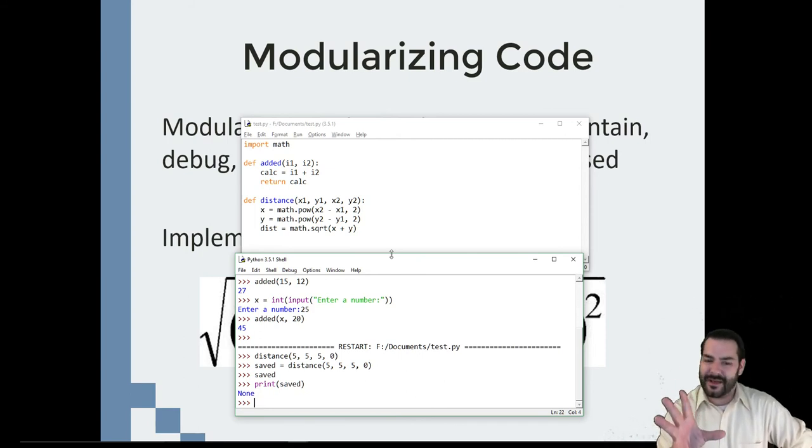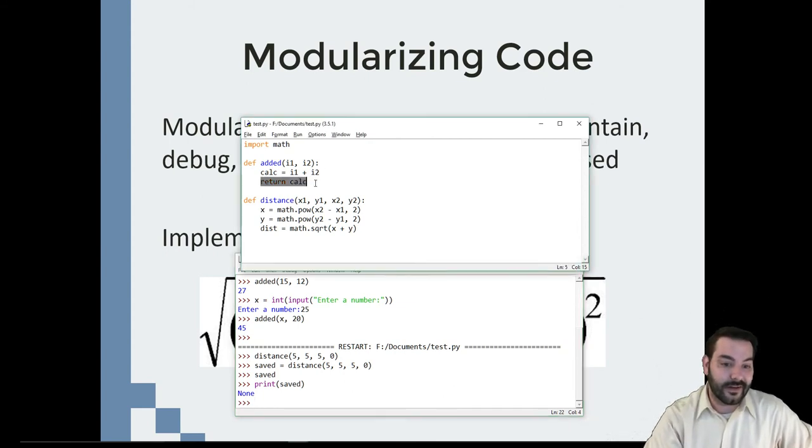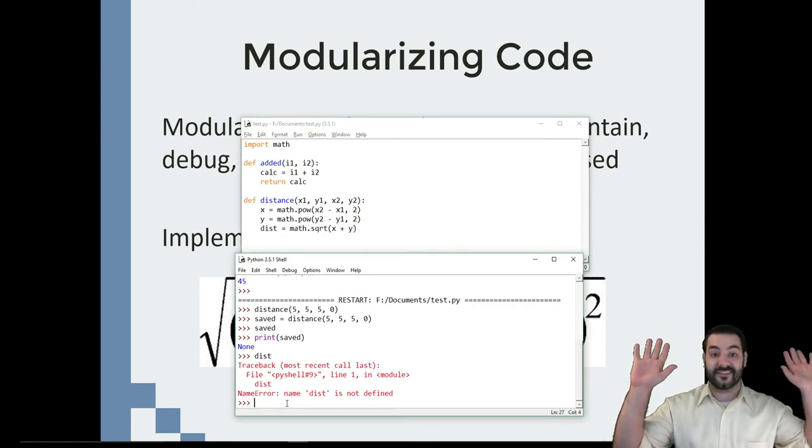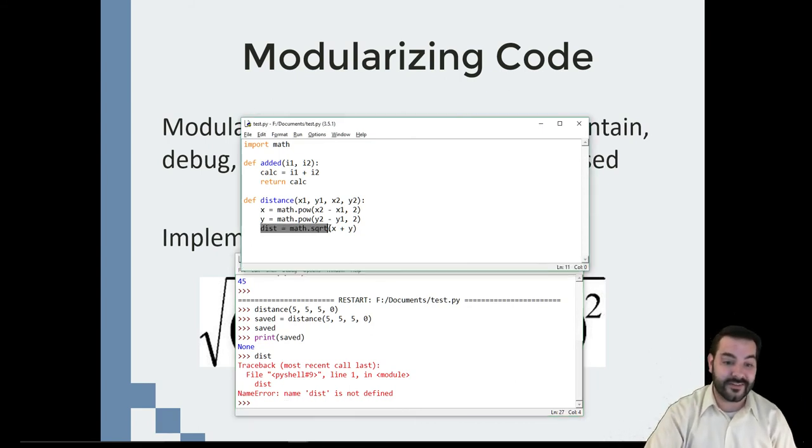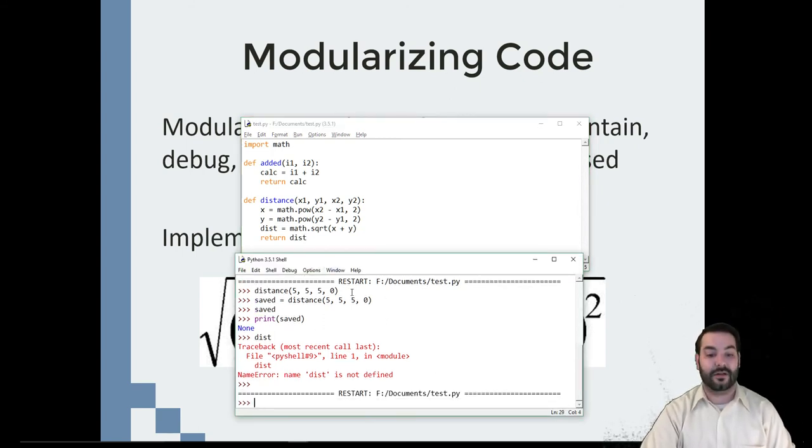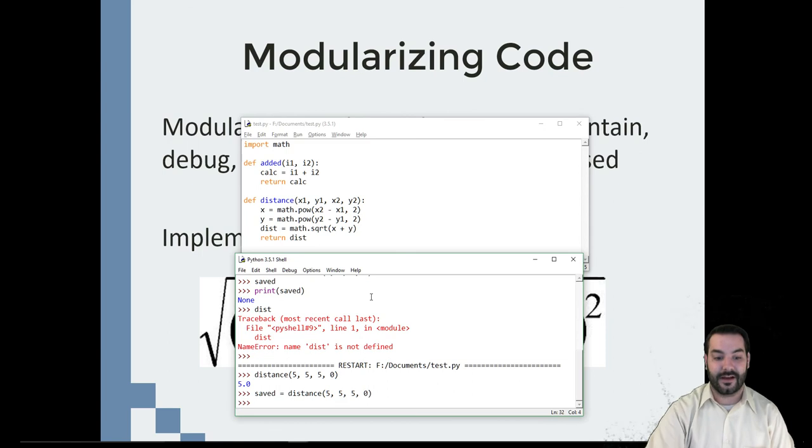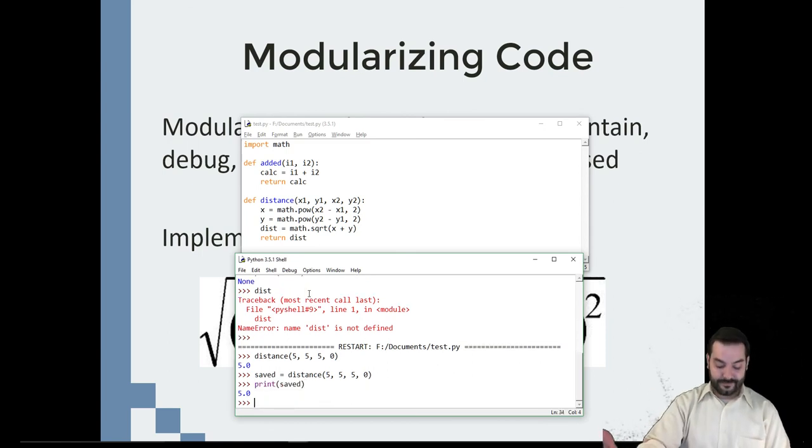Now, I'm not a betting man, but I know that that's not right. And the reason why is I didn't put my return statement in there. Just because I calculated this out. I don't have dist. In fact, dist doesn't exist. It was loaded into memory. This only exists inside of this distance function. So I have to return something if I want it to happen outside my code. Now, all of a sudden, I should see my 5. Now, all of a sudden, when I do saved, distance, 5, 5, 5. Now, all of a sudden, I've got my 5.